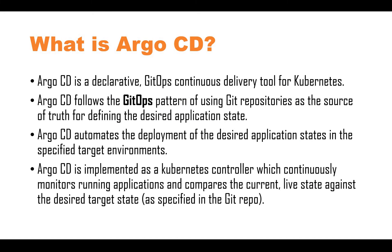For those who don't know what ArgoCD is, it's a declarative GitOps continuous delivery tool for Kubernetes — specifically for Kubernetes. ArgoCD follows the GitOps pattern of using a Git repository as the source of truth for desired application states. For example, you have a Git repository where your application is defined, with different YAML files for your Kubernetes cluster.